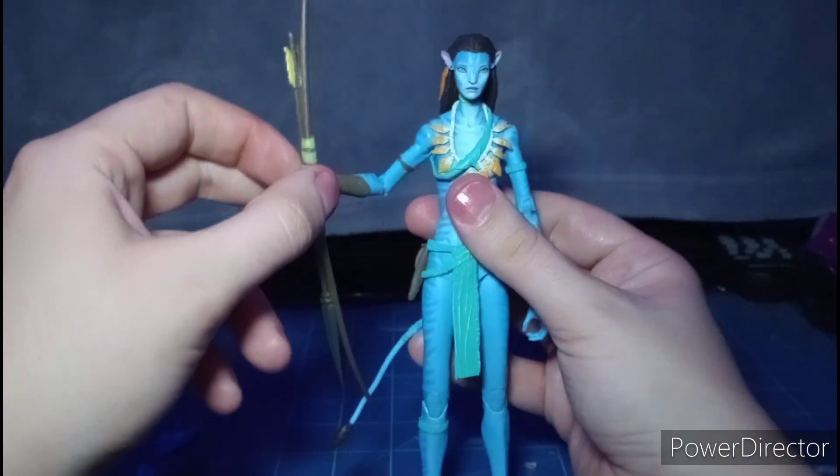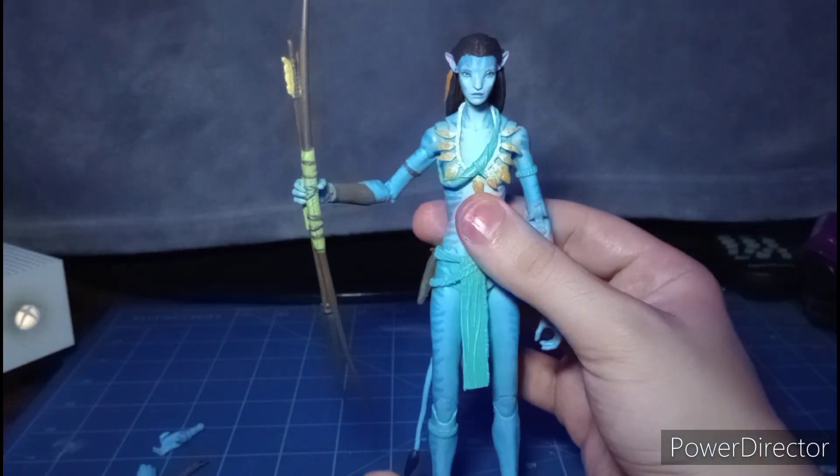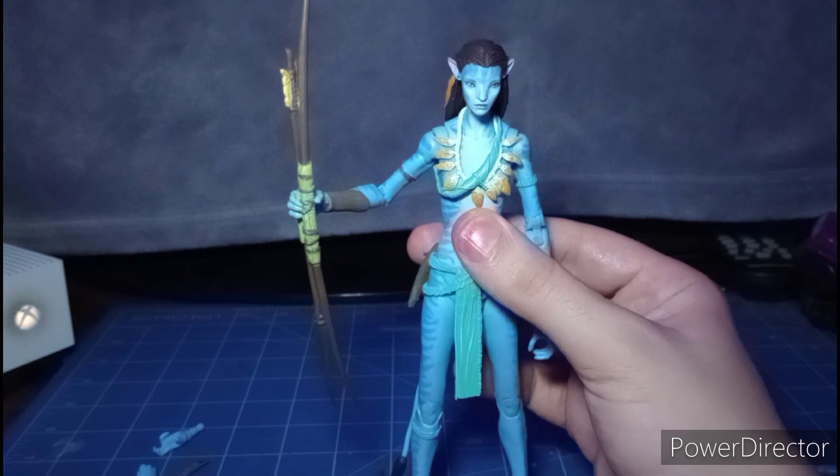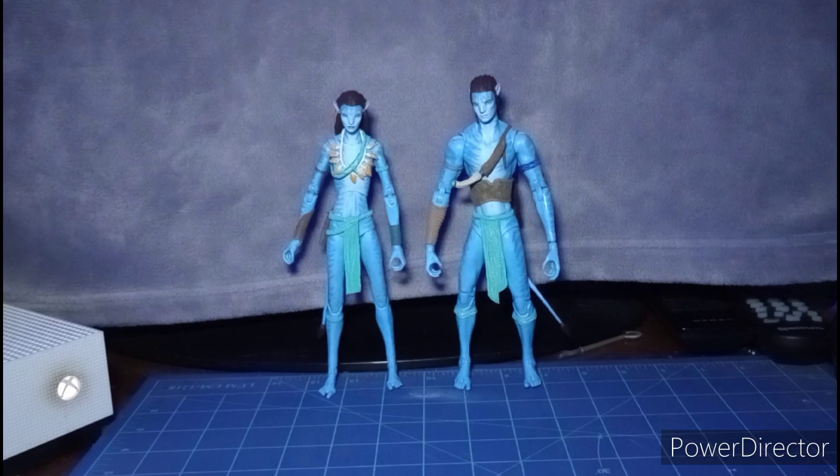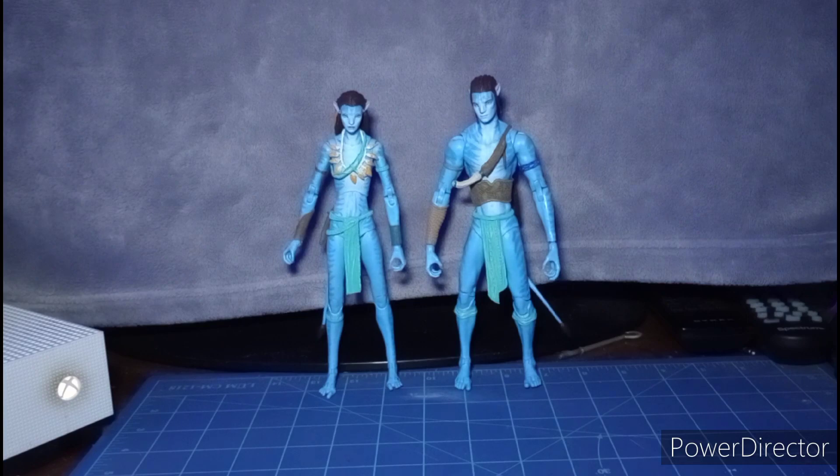Let's do a comparison with Natiri and the rest of the Avatar figures. Here's a comparison with Natiri standing next to her alongside Jake Sully. As you can see Jake is much taller than her as well.